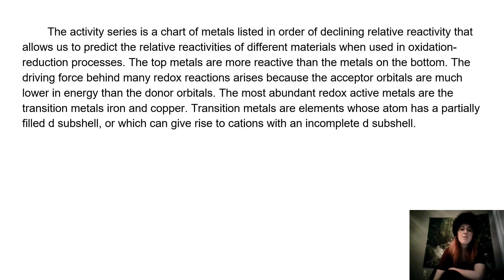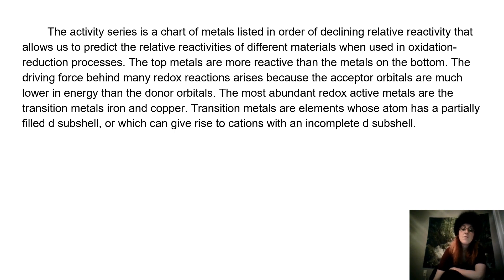The activity series is a chart of metals listed in order of declining relative reactivity that allows us to predict the relative reactivities of different metals when used in oxidation-reduction processes. The top metals are more reactive than the metals on the bottom. The driving force behind many redox reactions arises because the acceptor orbitals are much lower in energy than the donor orbitals.